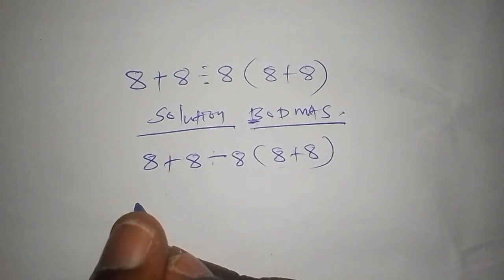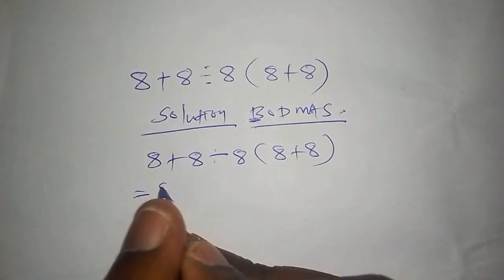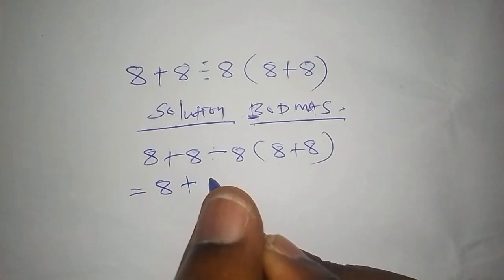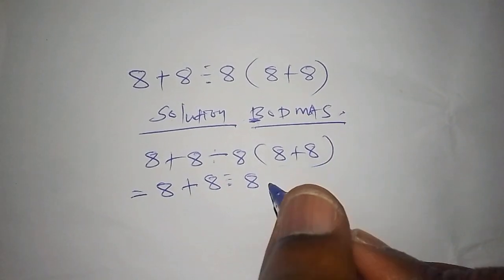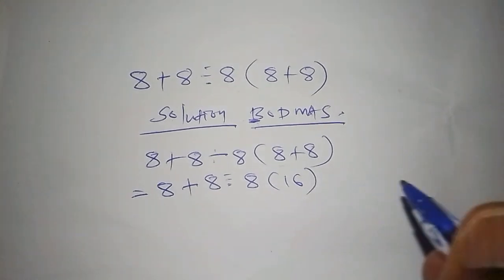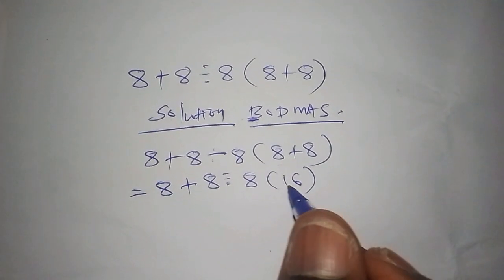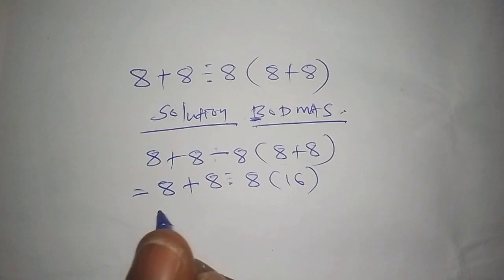We shall have 8 + 8 ÷ 8, then 8 + 8 is 16, so it's × 16. Now let's open the bracket. This equals 8 + 8 ÷ 8 × 16.